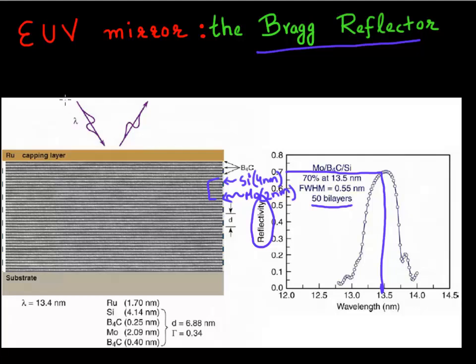So it will reflect light coming back at 13.5 nanometer, and it will not reflect the other light. And even with all this sophisticated bilayer stack and 50 of these bilayers, what you get essentially is a reflectivity of 70%, or reflectivity of 0.7.